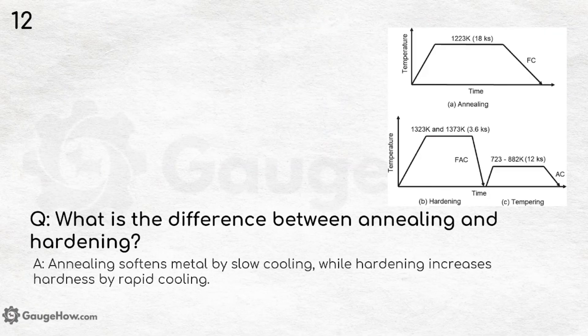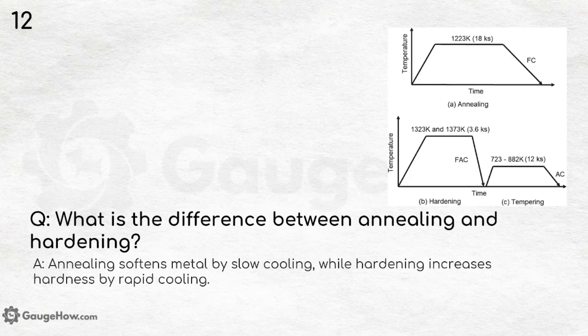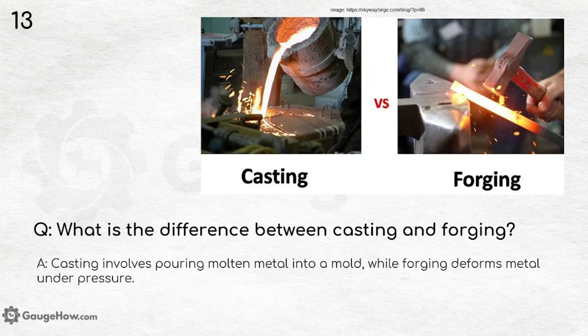What is the difference between annealing and hardening? Annealing softens metals by slow cooling, while hardening increases hardness by rapid cooling. This is a tricky question the interviewer might ask. What is the difference between casting and forging? Casting involves pouring molten metal into a mold, while forging deforms metal under pressure.